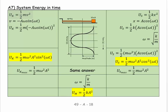For the kinetic energy, we use one-half mv squared. We know that v equals negative A·ω·sin(ωt), so the kinetic energy is one-half m times (-Aω sin(ωt)) squared, which gives us one-half m·ω²·A²·sin²(ωt).